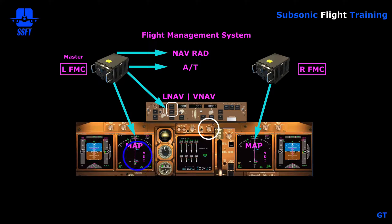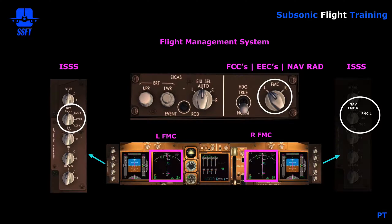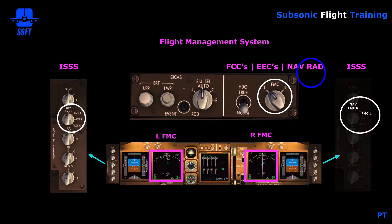When we look at the ND on the captain's side, we're looking at left FMC information. When we look at the first officer's ND, we're looking at right FMC information. The master switch is located on the forward instrument panel, normally left in the left position. This master switch controls the FCCs, the EECs, and the NAV radios. When we fly the airplane in LNAV and VNAV, the left FMC is providing that information. With the autothrottle engaged and climbing or descending in VNAV, the autothrottle is also getting its information from the left FMC. The FMC has a thrust management function, and the autothrottle is controlled by the flight management computer.